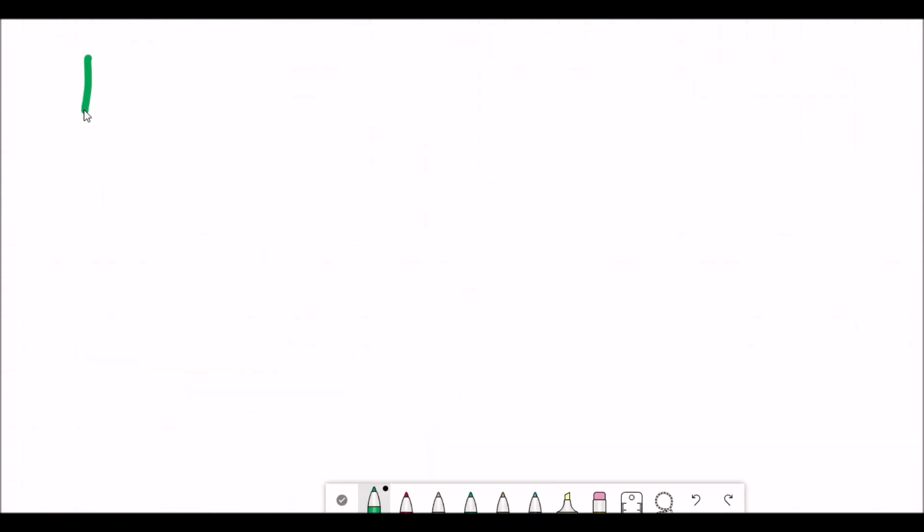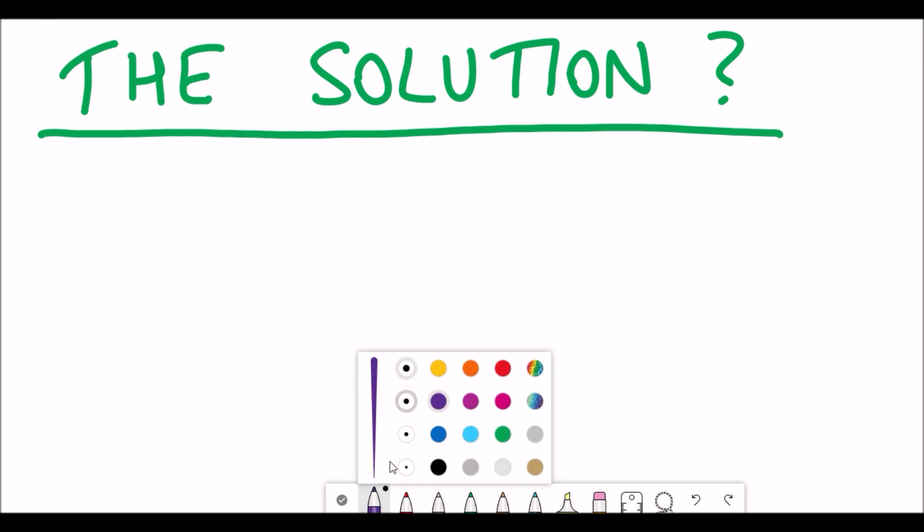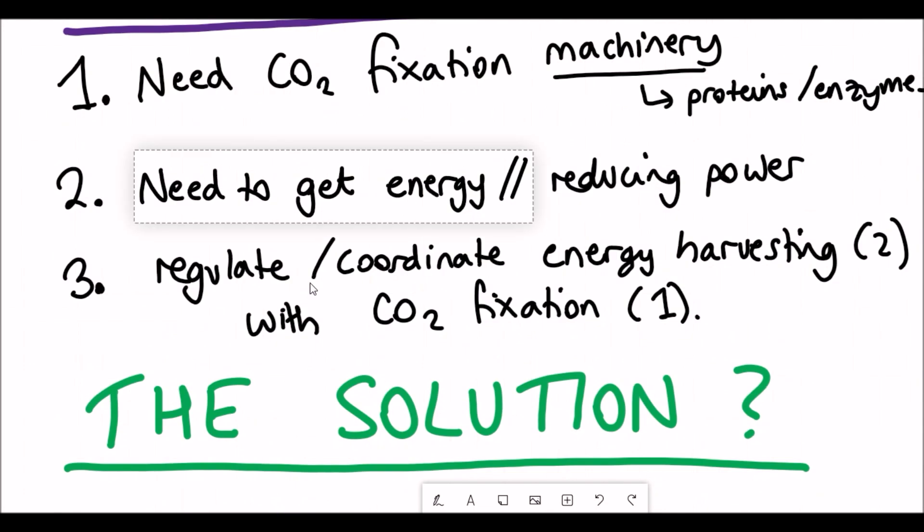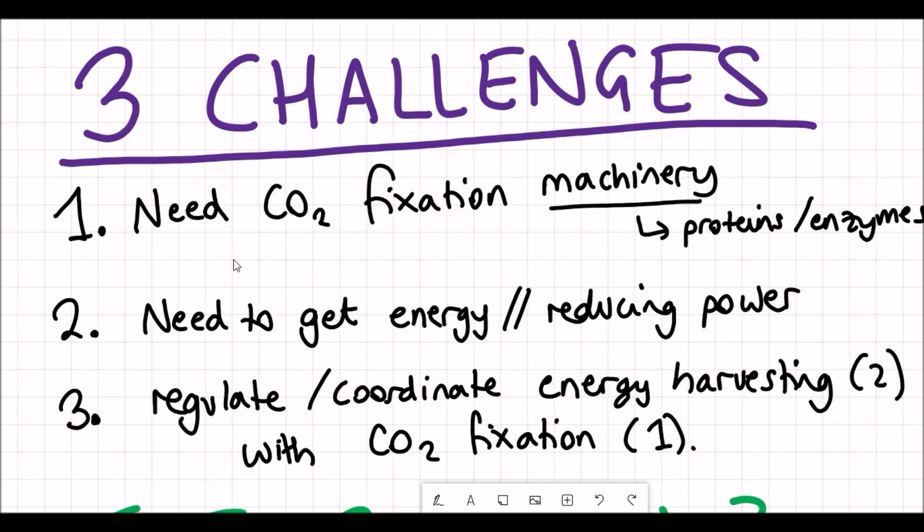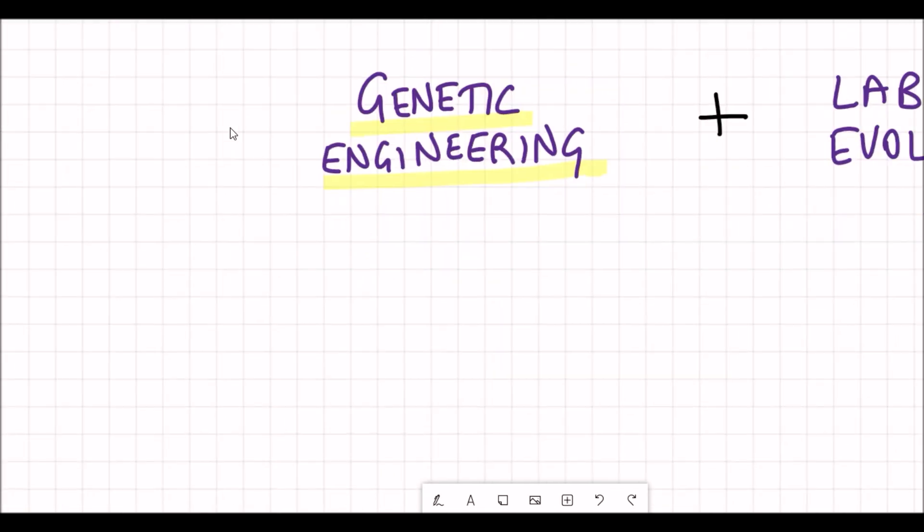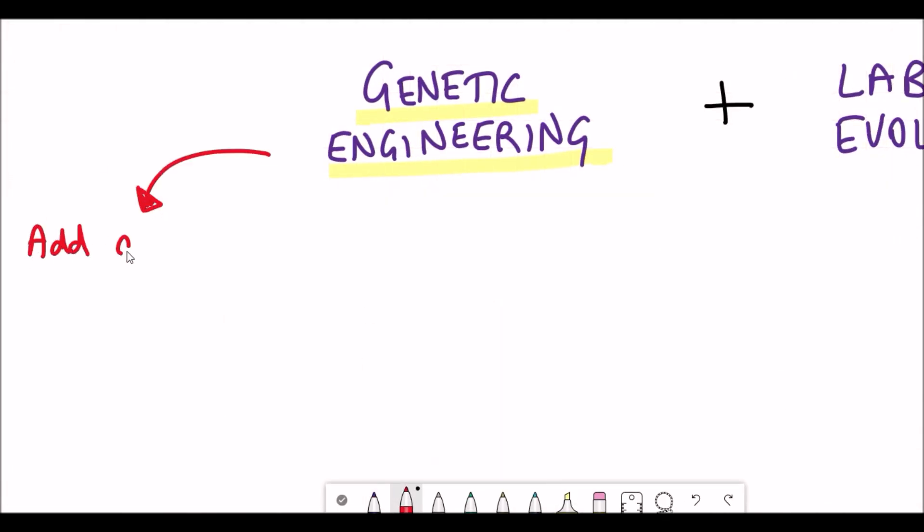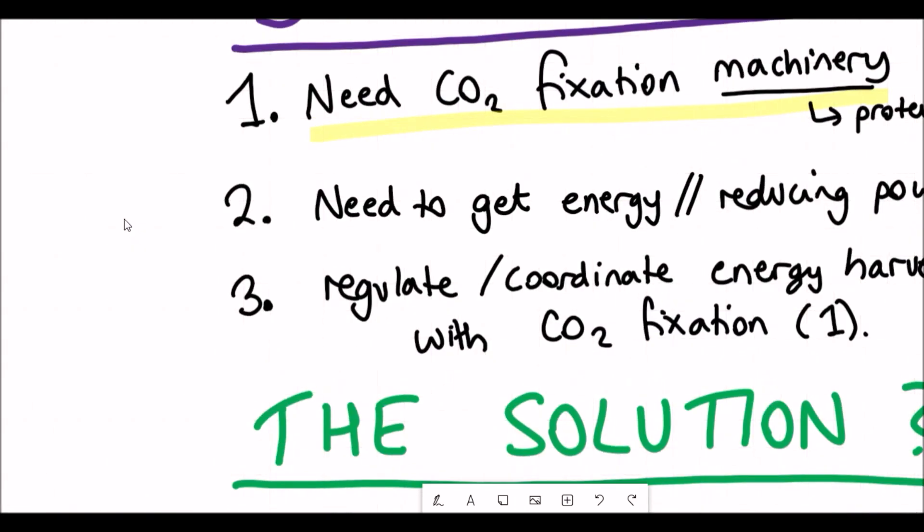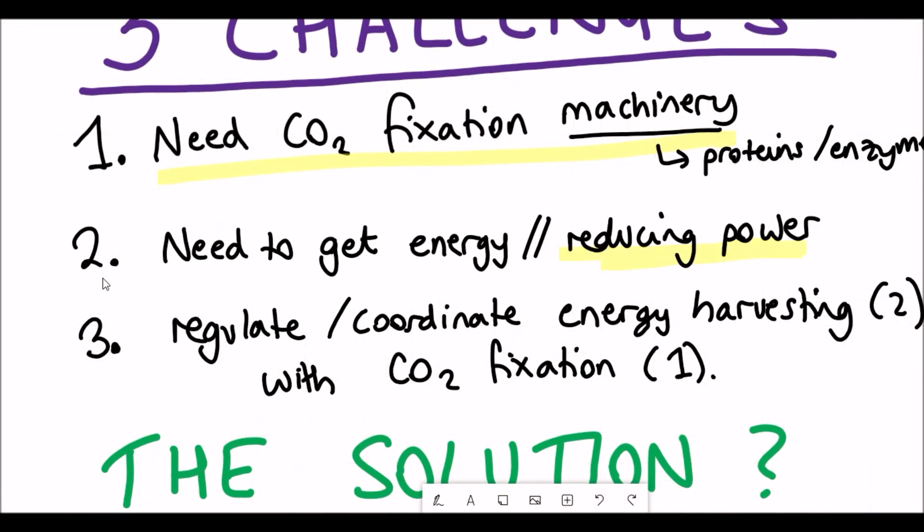So the solution discussed in this paper has a two-pronged approach. Firstly, they use genetic engineering and they couple this with the use of adaptive laboratory evolution. So firstly, let's talk about genetic engineering, which is simply just manipulating the genes present in the bacterium. What they did to solve the first problem about having the carbon dioxide fixing machinery is, well, you guessed it, they added the genes that enable this to happen. Two of the genes they added were rubisco and phosphoribulose kinase.